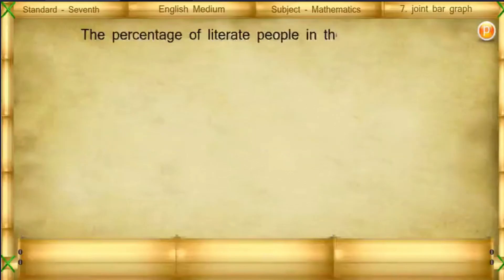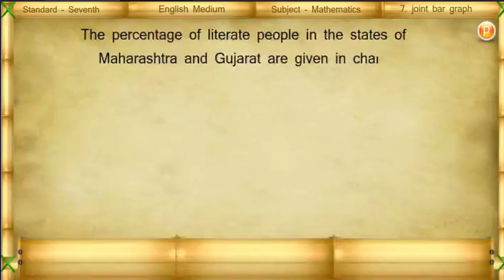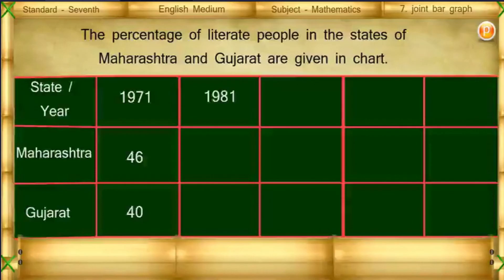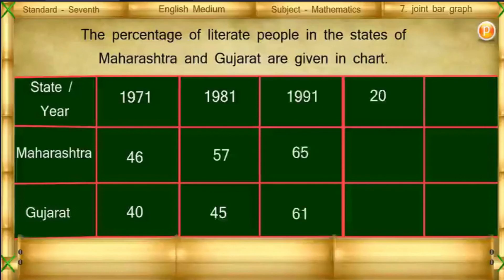Now see one more joint bar graph. The percentage of literate people in the states of Maharashtra and Gujarat is given. State / Year: Maharashtra / Gujarat. 1971: 46, 40. 1981: 57, 45. 1991: 65, 61. 2001: 77, 69.